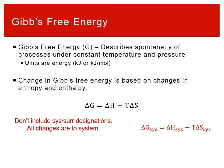The units on Gibbs free energy are kilojoules or kilojoules per mole — the same units as energy, which is why the word 'energy' is in the name. There's also the word 'free,' which we'll talk about. Gibbs free energy, G, describes the spontaneity of processes under constant temperature and pressure.